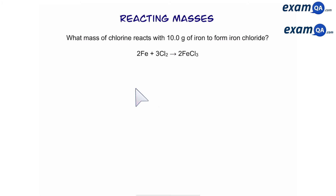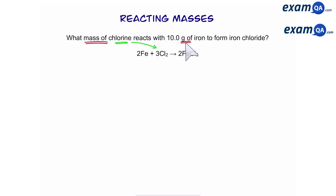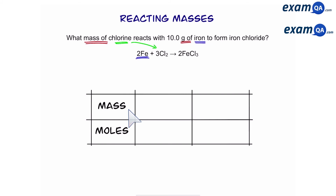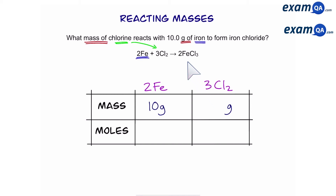Last question: what mass of chlorine reacts with 10 grams of iron to form iron chloride? You should know the drill by now. The first thing we do is highlight 'mass of' and 'grams of'. So mass of chlorine and grams of iron — those are our two most important chemicals. We write mass and moles, then write iron and chlorine. We can ignore iron chloride. Mass of iron is 10 grams; mass of chlorine is what we're not sure about.